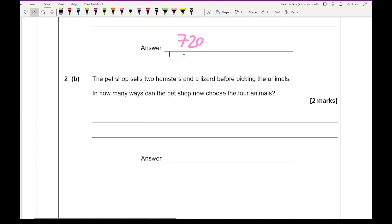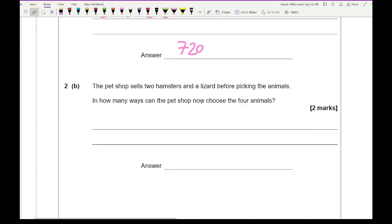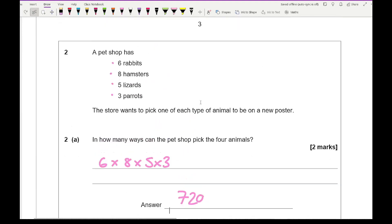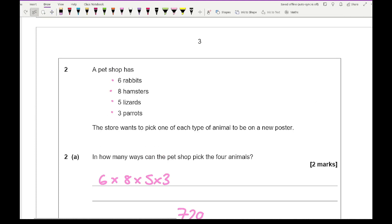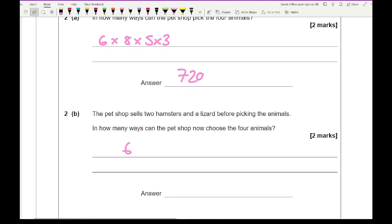It then says the pet shop sells 2 hamsters and a lizard before picking the animals. How many ways can the pet shop now choose the 4 animals? So if we go back, they've sold 2 hamsters, so if we take away 2 that leaves us with 6, and we take away 1 lizard that leaves us with 4, but we've still got the 6 rabbits and we've still got the 3 parrots. So then multiplying 6 times 6 times 4 times 3, I get an answer of 432.